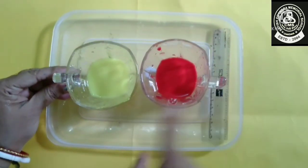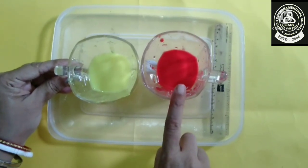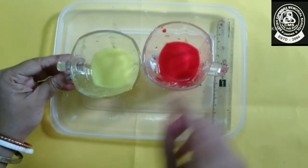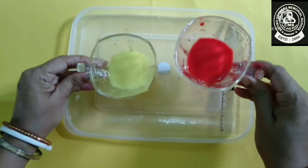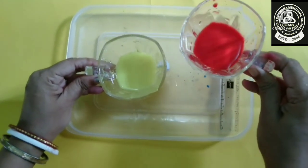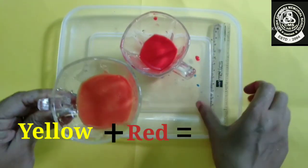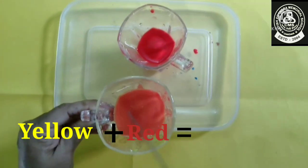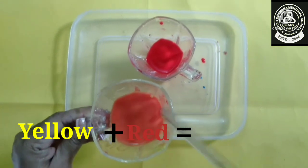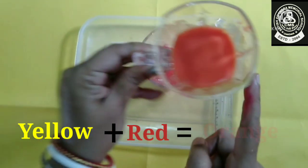Now we will mix the next two primary colors, yellow and red. So let's start mixing. Observe the color very carefully. This is orange color.